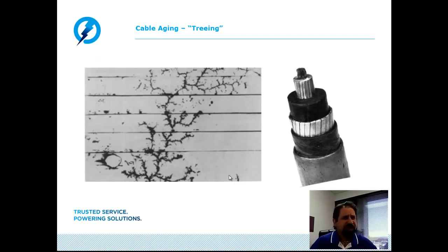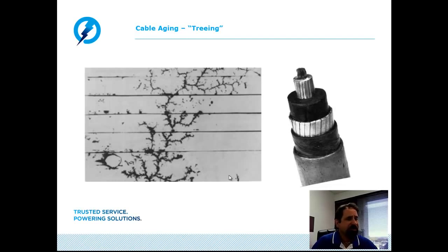In the case of extruded dielectric, the treeing is a result of water ingress and contamination — referred to as a water tree. In laminated cables, the most common cause of the treeing effect is the drying of the oil and burning of the insulating layers of paper. As the insulating layers of paper burn, they leave behind carbon deposits, which are conductive. Over time, as the papers burn and leave behind carbon deposits, a conductive path forms through the insulation, causing cable failure. This type of treeing is referred to as a carbon tree.